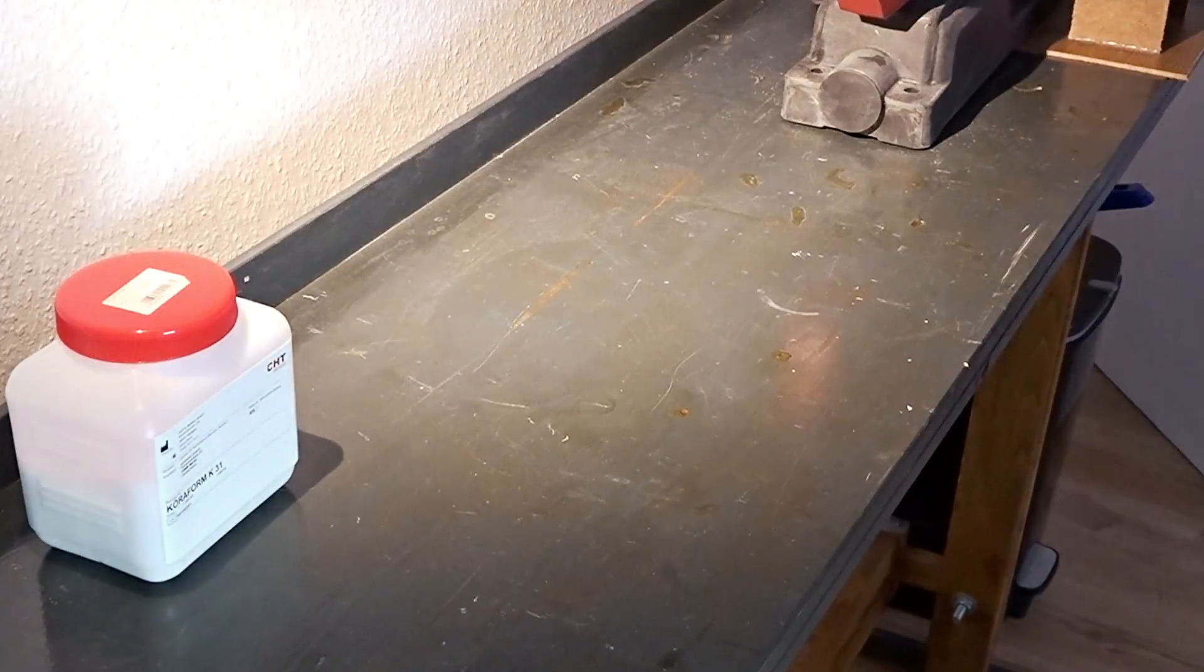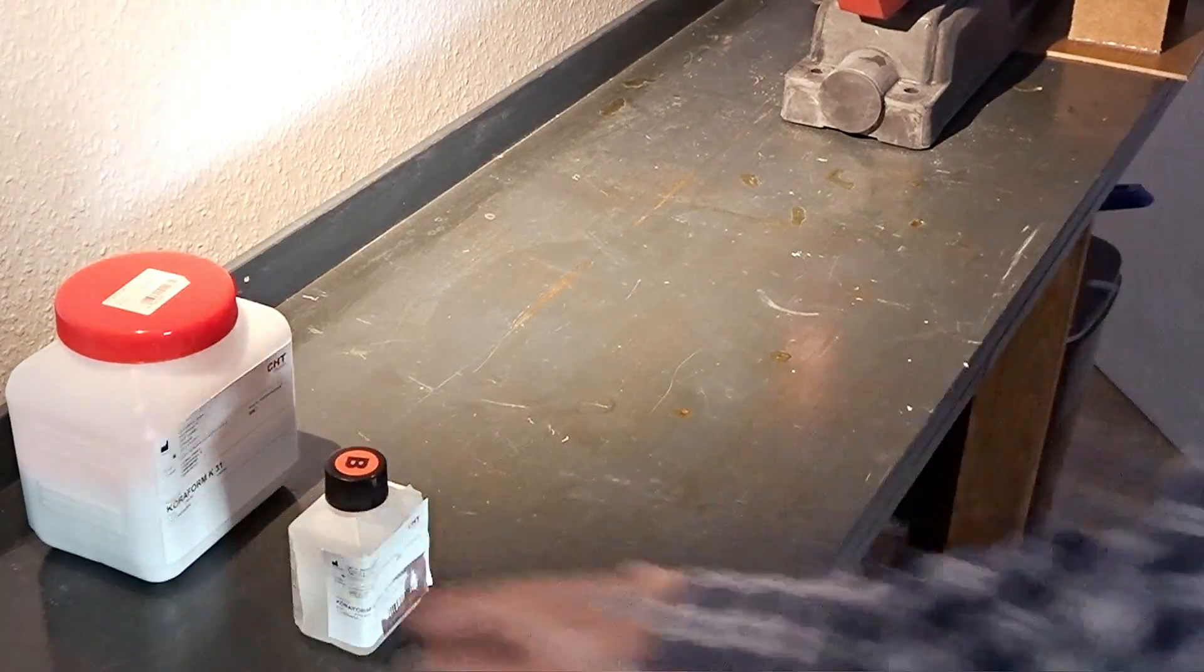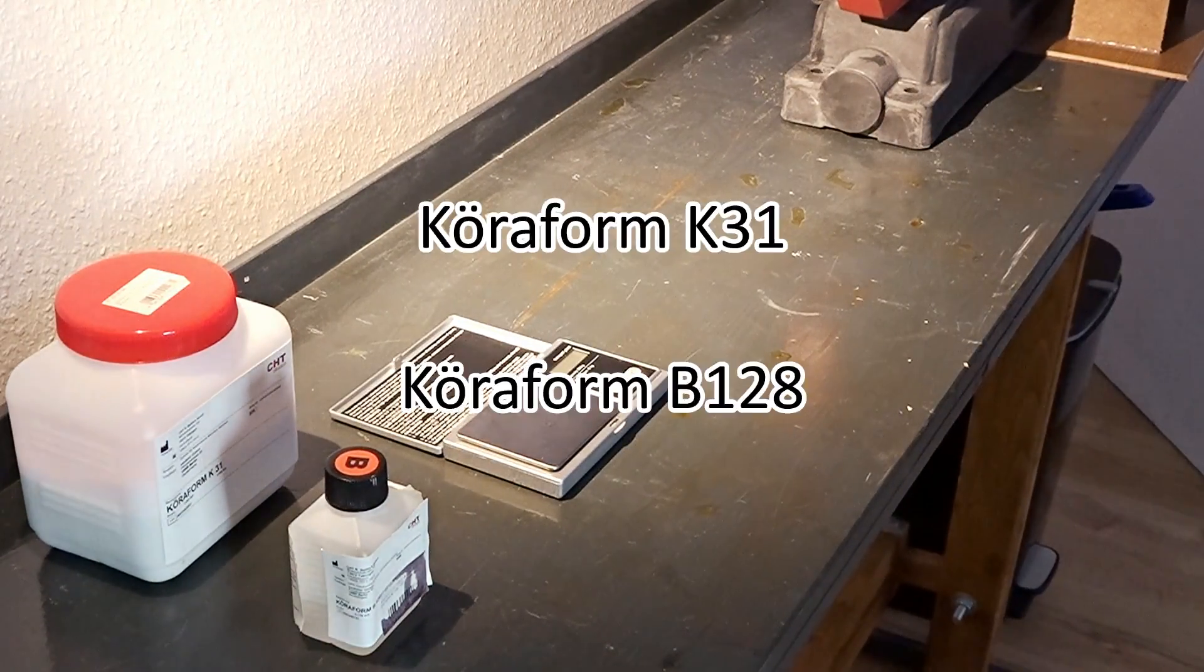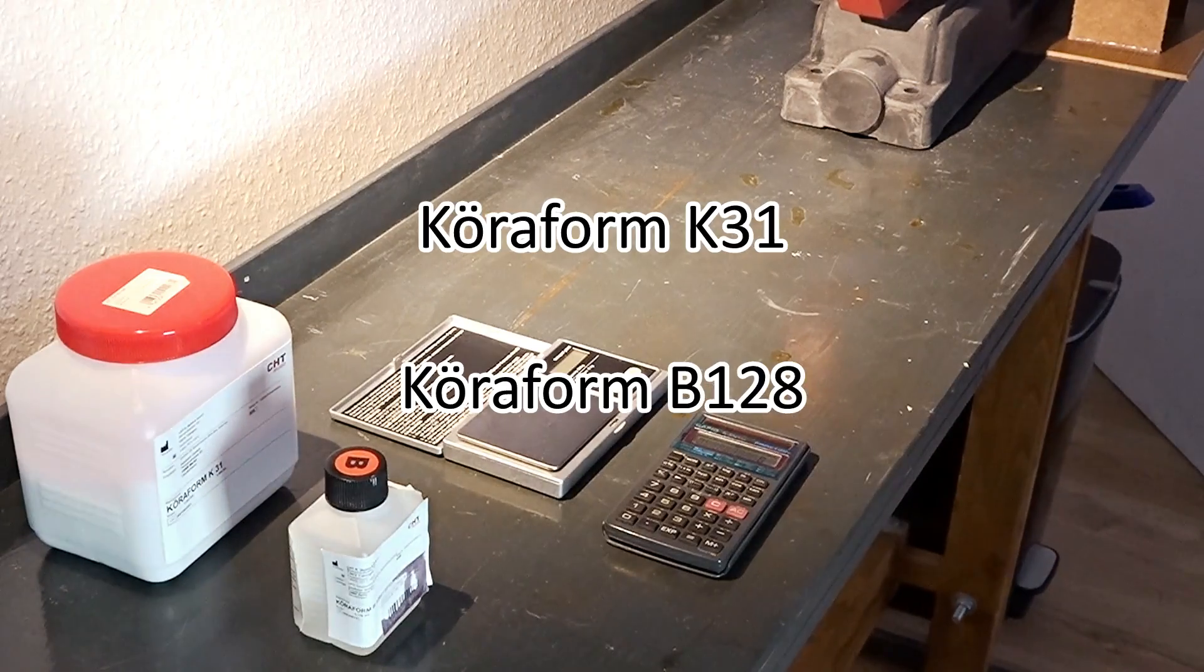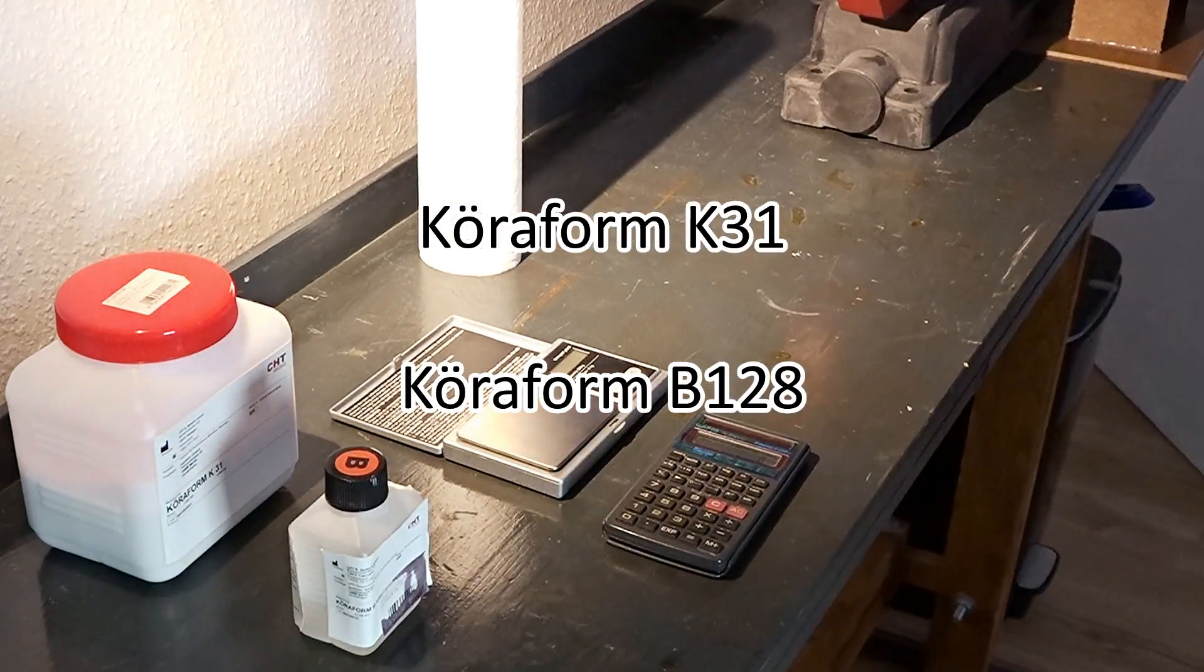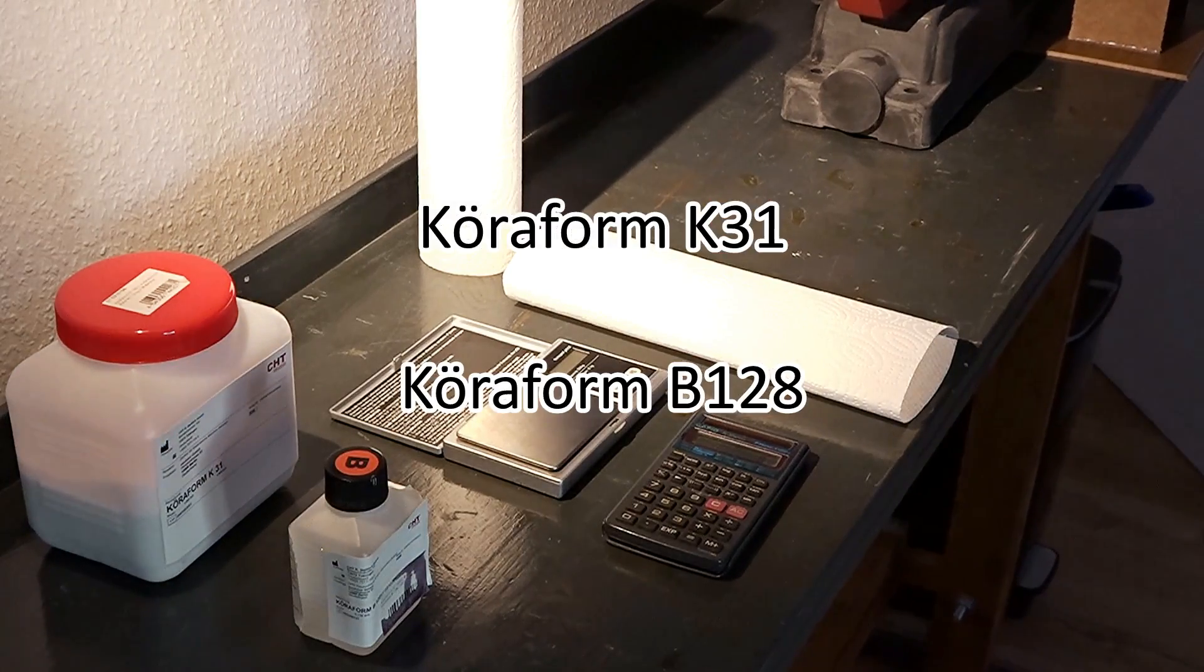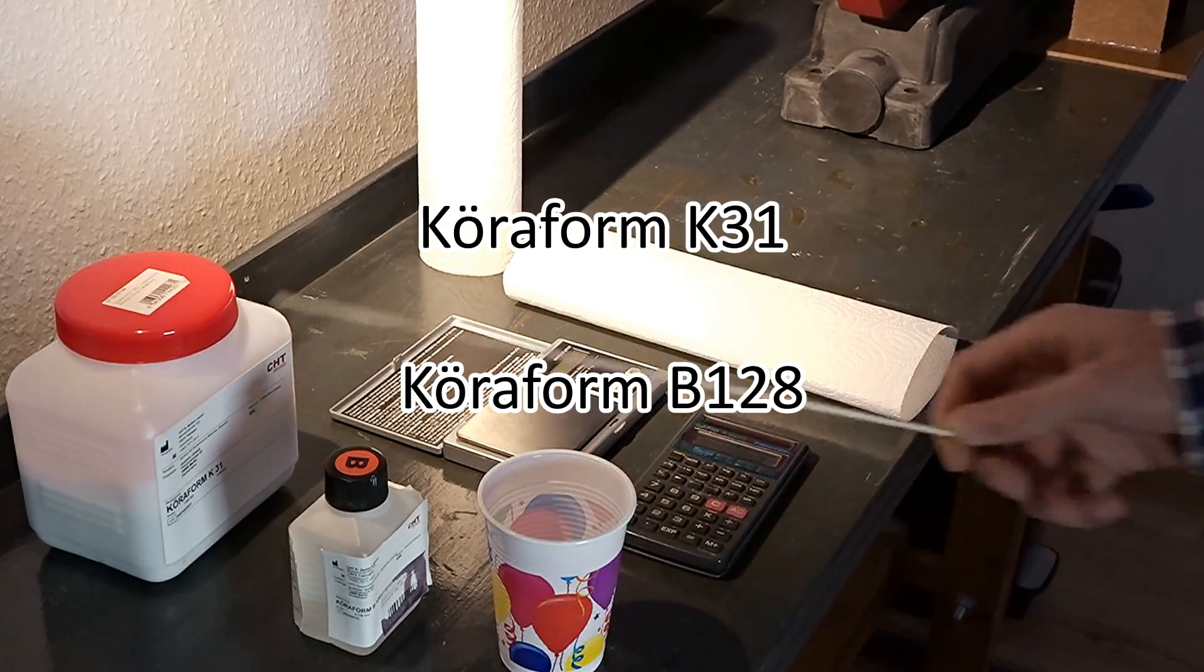For the actual mold, you will need this silicone rubbery stuff. The stuff I use is called Curaform K31 and also the B component Curaform B128. Also quite handy will be a scale, a calculator, some paper towels, a cup and a stirring stick.